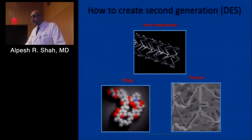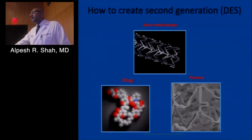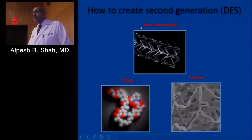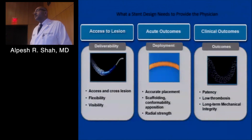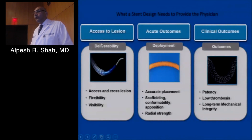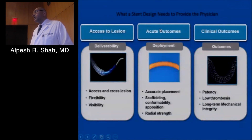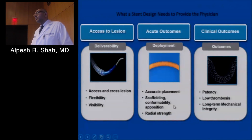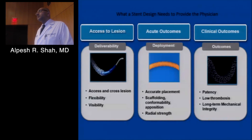How does one create second-generation stents? There are key elements of design: the metal alloy choice, the drug molecule, and the role of polymer. Physicians need certain attributes from a stent — it has to be deliverable and flexible, it has to cross tough lesions, provide accurate placement, scaffolding, and radial strength to prevent immediate recoil, as well as long-term patency, low thrombosis, and mechanical integrity. These are the considerations that must go into designing any stent, especially drug-eluting stents.